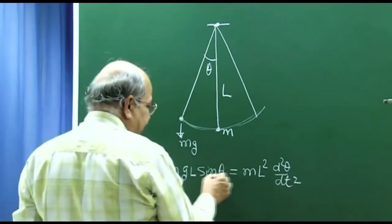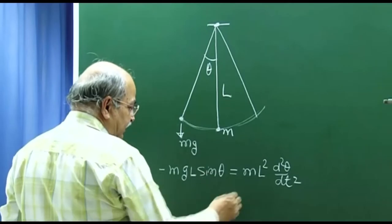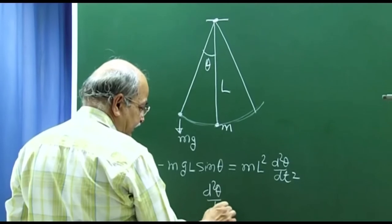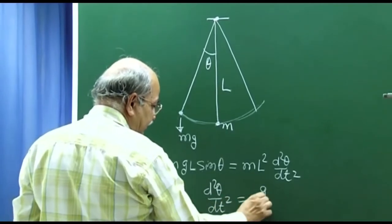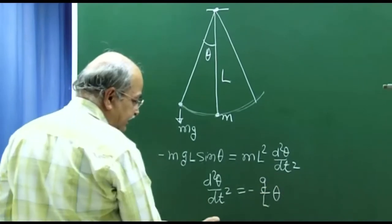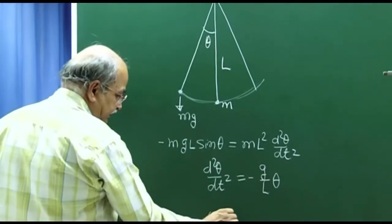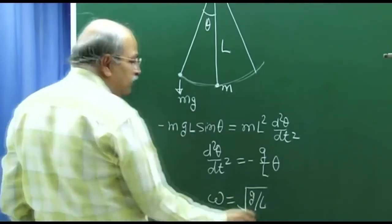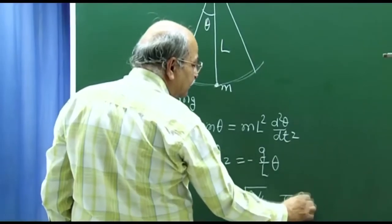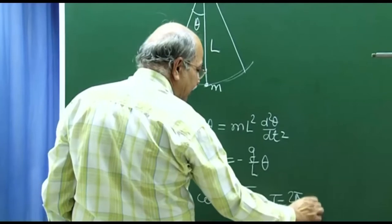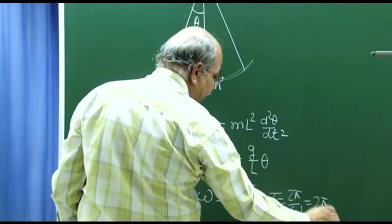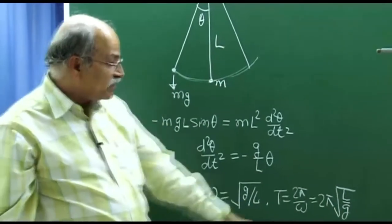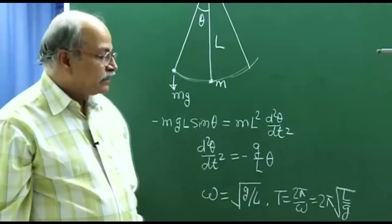And then you say that theta is small, so sin theta can be written as theta. And then it is d2 theta dt squared equals minus g by L theta, and hence omega is square root of g by L. And if you need time period, it is 2 pi by omega, and that is 2 pi square root L by g. The standard equation, the standard formula for time period of a simple pendulum that one studies in schools.